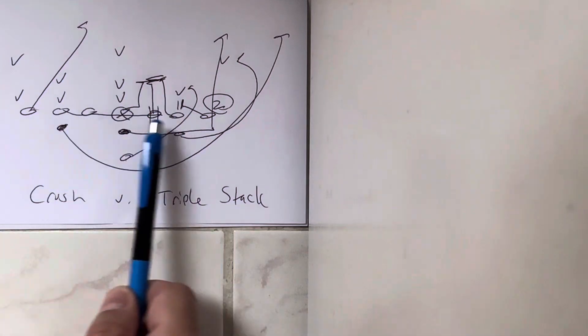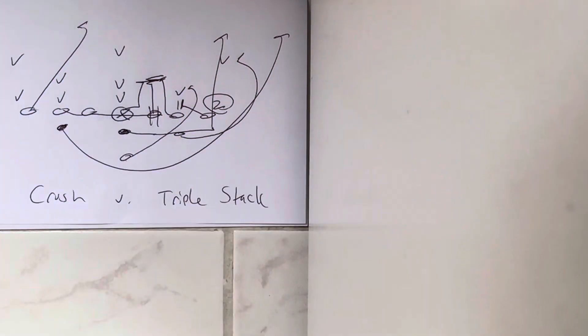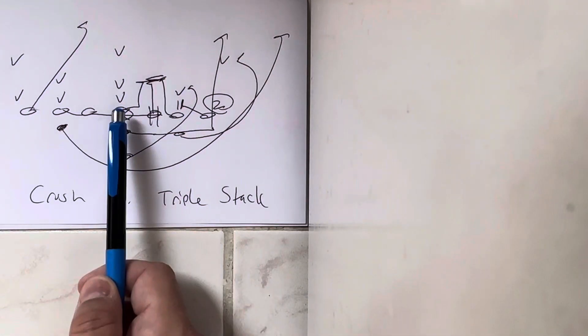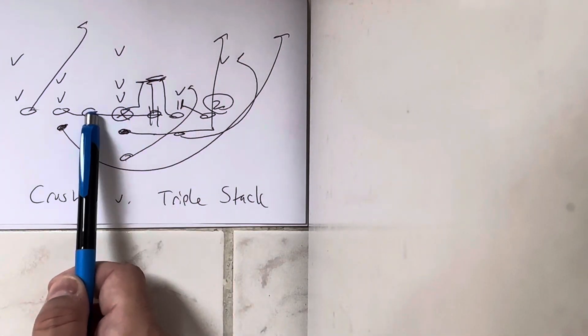Same thing with the backside receiver where the wedge is set on the guard. The tackle wedge is with the guard, the center wedge is with the guard, backside guard blocks the spine of the center.